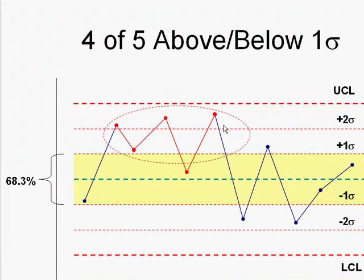Similarly, if we have four out of five points above one sigma or below one sigma, that's 80% of your points are outside of zone C here. And two thirds should be in here. So that seems like an out of whack kind of condition.